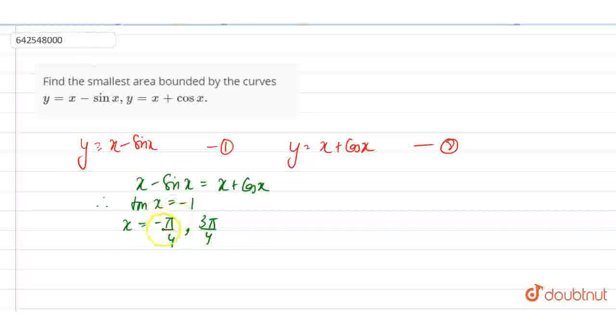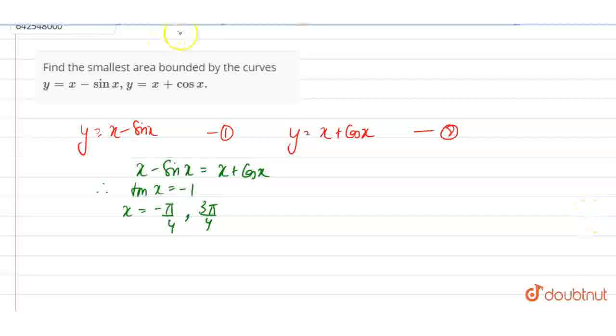So guys, now we have to just find the required area. Required area, which is equal to modulus of integral minus pi by 4 to 3 pi by 4.